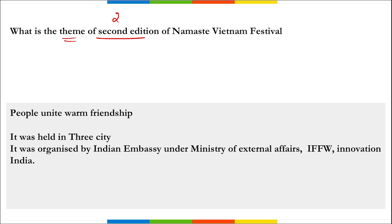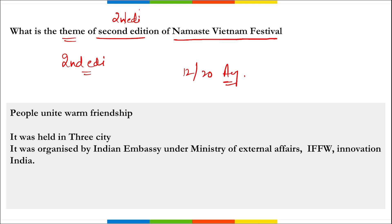The theme of the 2nd edition of the Namaste Vietnam Festival is 'People Unite, Warm Friendship.' The festival was held in three cities of Vietnam: Ho Chi Minh City, Dalat City, and Tuy Hoa City, from 12th to 20th August. The festival is an interaction of culture and commerce, promoting bilateral relations including tourism, trade, art, culture, music, and film.